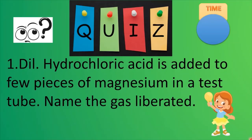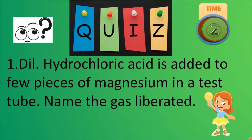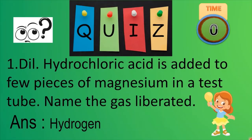Quiz time! The first question: dilute hydrochloric acid is added to a few pieces of magnesium in a test tube — name the gas liberated. And the answer is hydrogen. Hydrogen is the gas liberated. I believe you guessed the answer right.